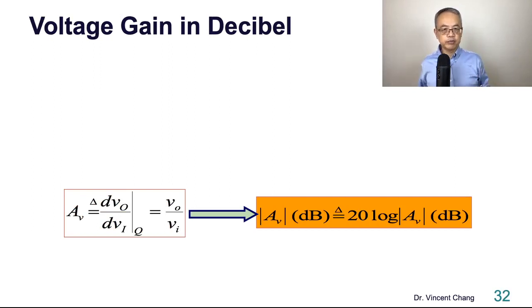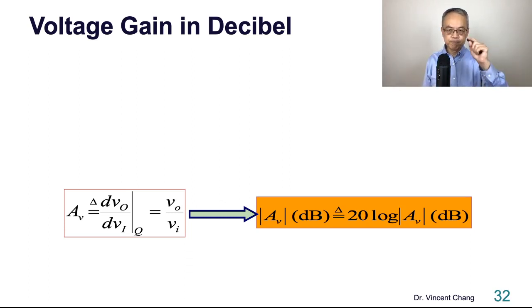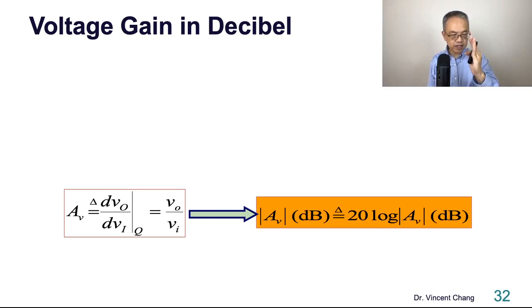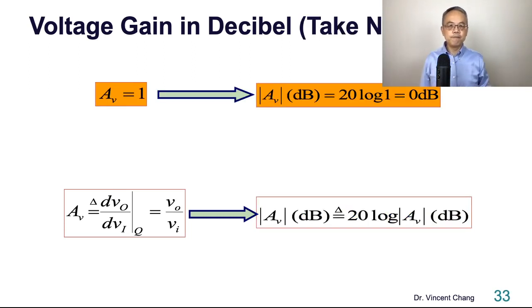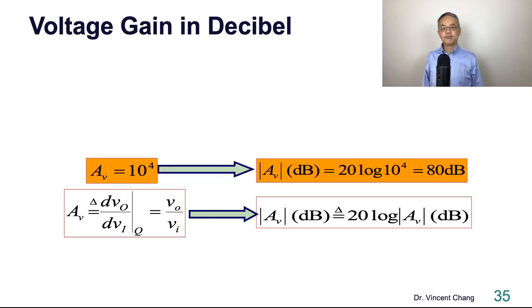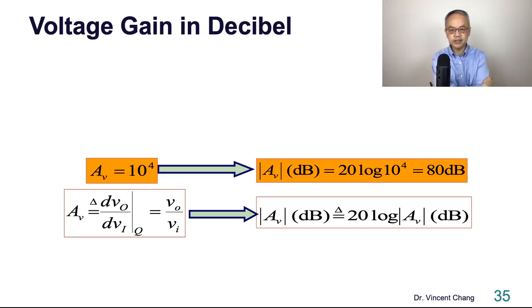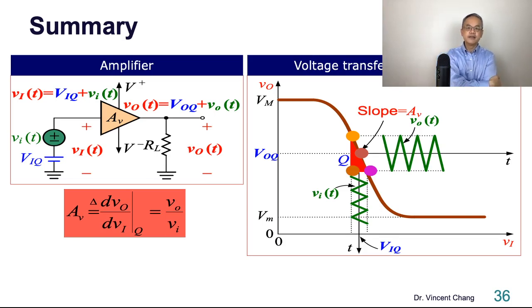Voltage gain in decibels. There are two ways to express gain data: linear scale and decibel scale. The voltage gain in decibels is defined as 20 log base 10 of the magnitude of the voltage gain. For example: a linear gain of 1 equals 0 dB; a gain of 100 equals 40 dB; and a gain of 10 to the fourth power equals 80 dB.